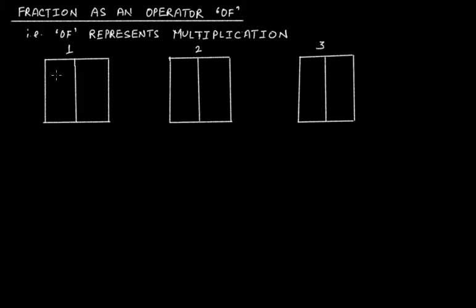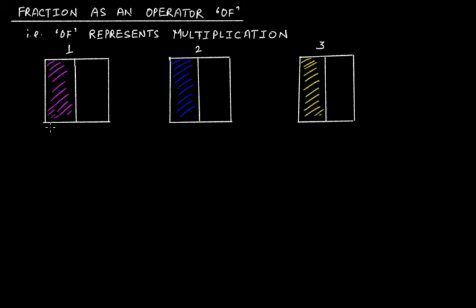Now let's say that the half portion of the first rectangle is colored pink, the second is blue, and the third is yellow. This pink block represents half — that is one-by-two — of this whole, which represents one unit.